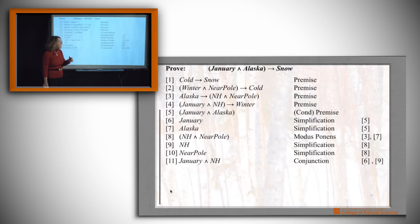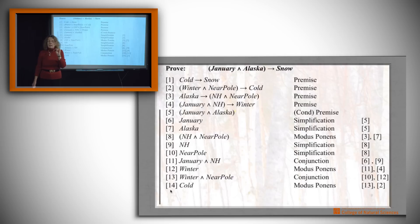And so we can put the January assertion and the northern hemisphere assertion together since we know both of them. And with that, we're going to be able to use modus ponens with January and northern hemisphere to derive winter. This is progress. Now what we can do is put winter together with the fact that we're near the pole. And with those two together, we're going to be able to use two and modus ponens and conclude cold.